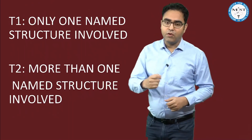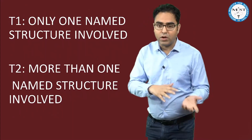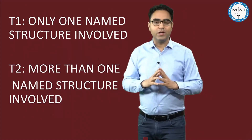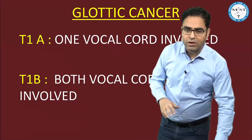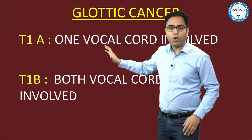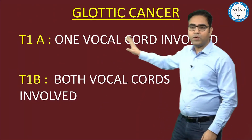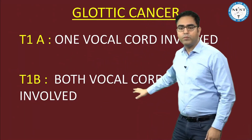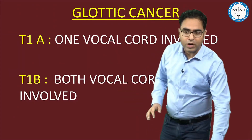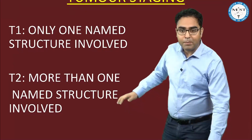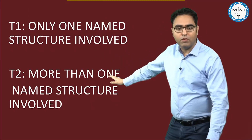You can ask: if one vocal cord is involved versus two vocal cords are involved, is it T1 or T2? It is vocal cord only, so if one vocal cord is involved it is called T1A; if both cords are involved it is called T1B. So one vocal cord involved = T1A, both cords involved = T1B, because it is still the same named structure — vocal cord. One named structure involved = T1; more than one named structure involved = T2.